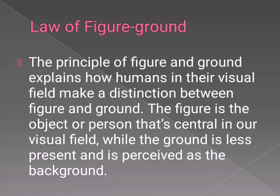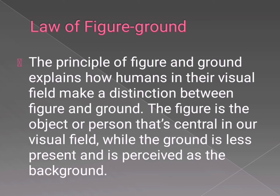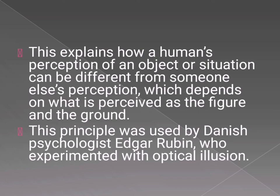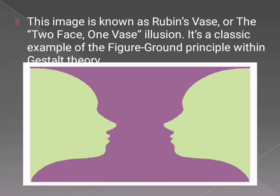Next is the law of figure-ground. The principle of figure-ground explains how humans in their visual field make a distinction between figure and ground. The figure is the object or person that is central in our visual field, while the ground is less present and is perceived as a background. This explains how a person's perception of an object or situation can differ from someone else's, depending on what is perceived as the figure and the ground. This principle was used by Danish psychologist Edgar Rubin, who experimented with optical illusion.